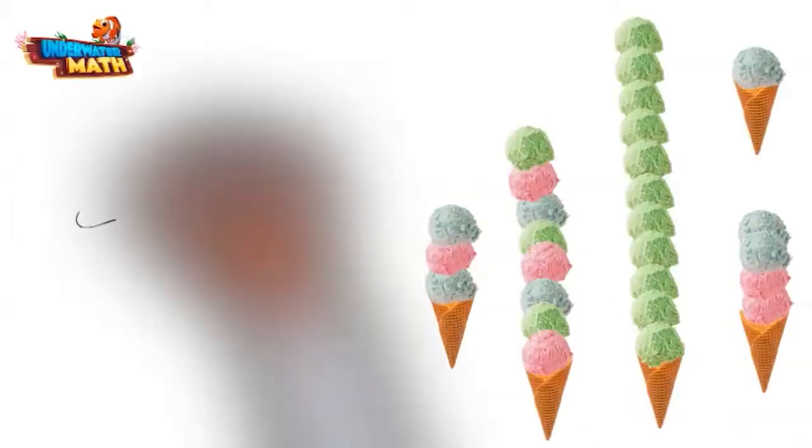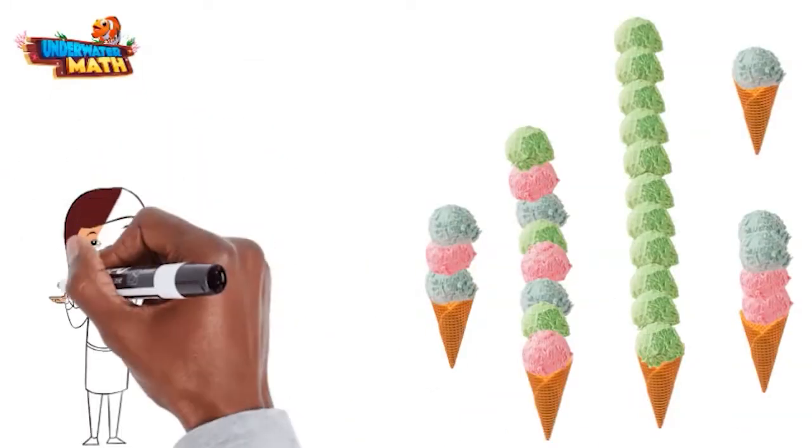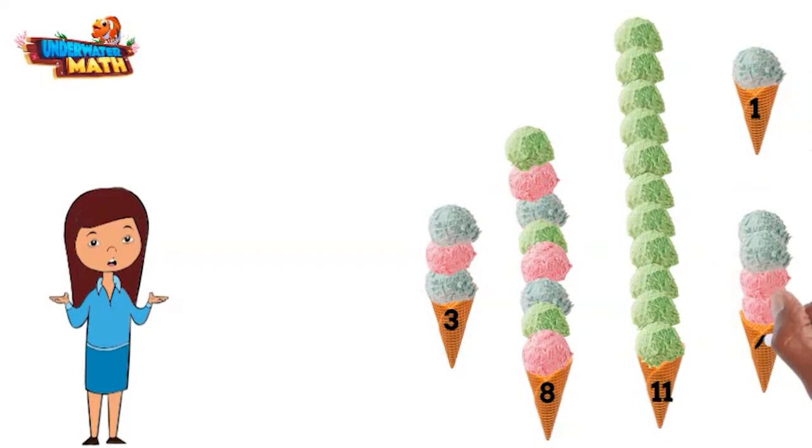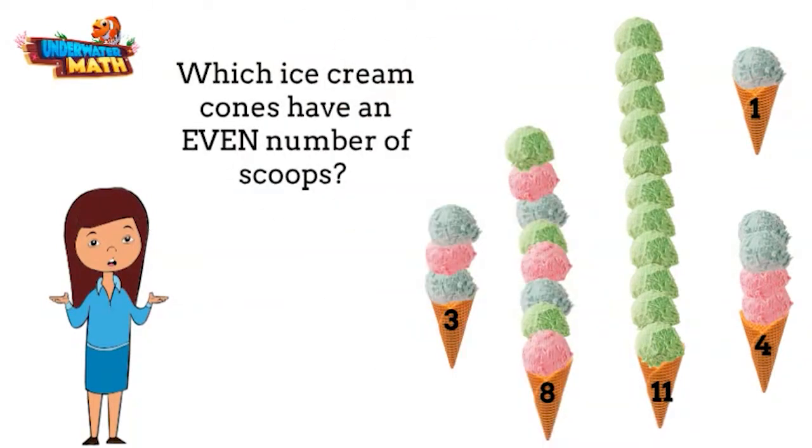Try another one with me. Yikes, that's a lot of ice cream. Bethany only wants the ice cream cones with an even number of scoops. Help her find the even numbers.